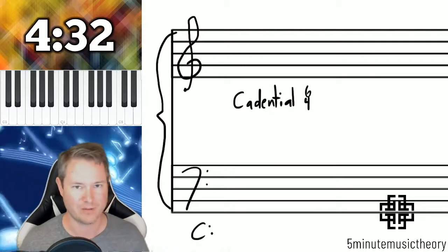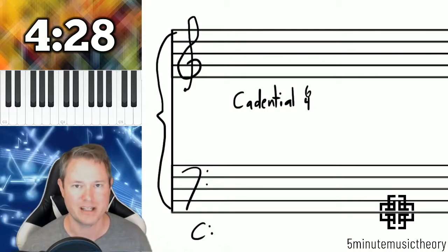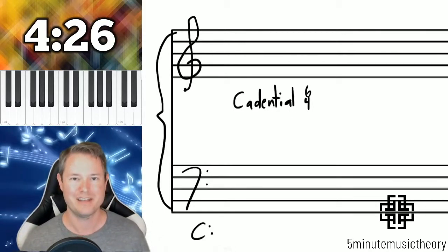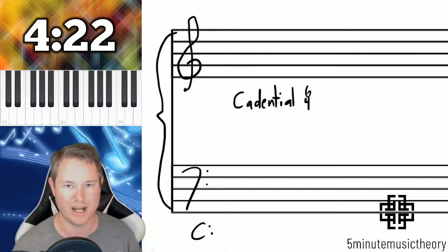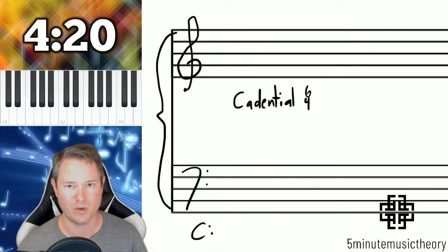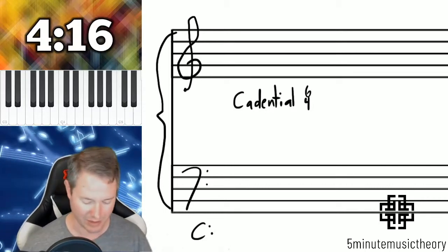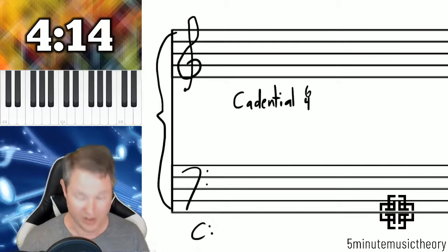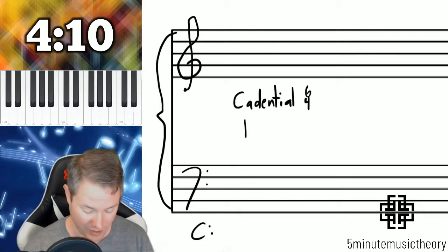Now remember that 6-4s are not functional so whenever you write 6-4 down you need to write something else and there's a lot of controversy believe it or not behind the labeling of cadential 6-4s. I'm going to show you three ways and then I'll show you which of those three ways of labeling that I prefer and that I think most music theory professors prefer as well. We'll go through all of them but let's talk first about what the cadential 6-4 is.